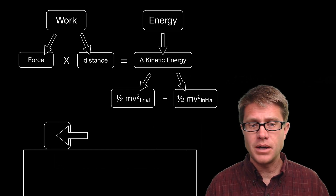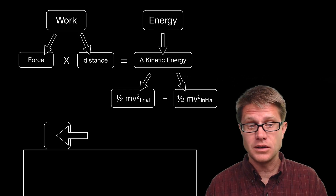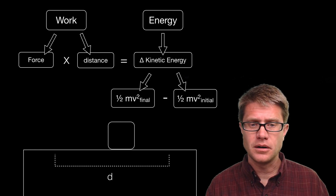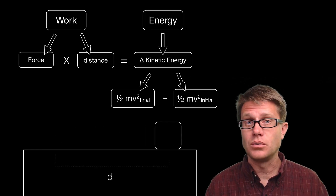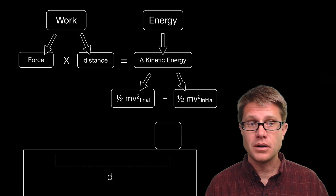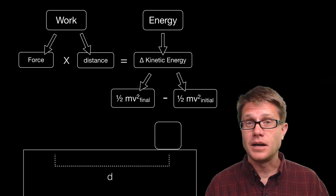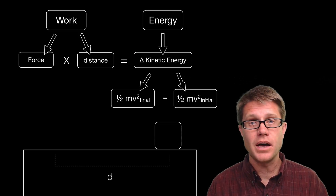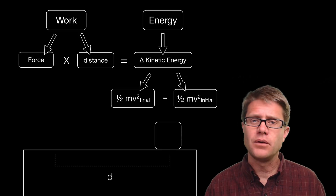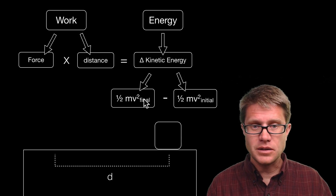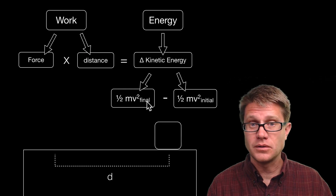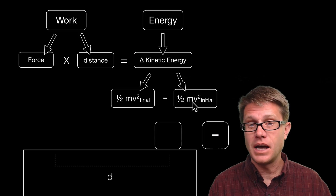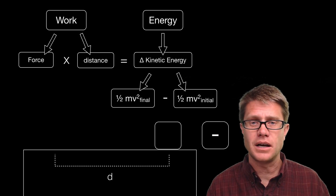Let's look at a different scenario. Now we have an object that is moving towards the right, but we are applying a net force to the left. You can see it is going to slow down. We have a negative force times the distance, so we are decreasing the amount of kinetic energy in that object — we are taking that energy away, which makes sense because the object is coming to rest. If we look at the velocities, we now have a final velocity of zero minus that initial velocity, so we are going to have a negative energy. We have lost kinetic energy.